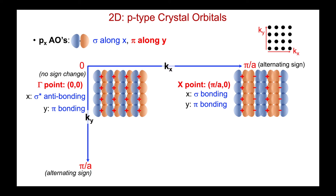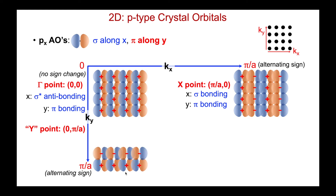Now we'll change ky from zero up to π/a. Starting with kx = 0 but ky = π/a — our so-called y point. kx is zero, so no sign changes there. For ky, however, we're going to change all the signs — we've flipped them all. So I reverse the orientation of each p orbital, or the entire row: minus, minus, minus, minus. No sign changes still along x, but now we can see we're getting out-of-phase pi interactions along the y direction.